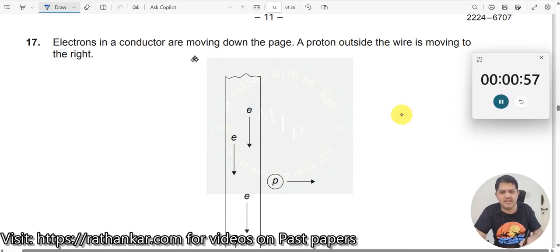Question number 17. Electrons in a conductor are moving down the page. Electrons, negative charged particles, they are moving like this.